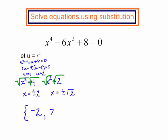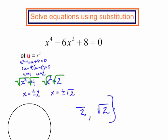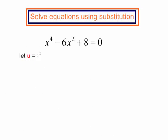Negative 2, positive 2, negative radical 2 or square root of 2 and a positive square root of 2. Now some of you may have jumped to factoring. You may not have used substitution here. Which in this particular problem it's not that hard to factor this.